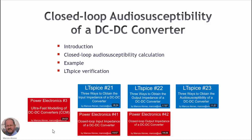This is another video in this series. Previously we have seen how to obtain the input impedance of a DC-DC converter in open loop and closed loop. Then we studied how to obtain the output impedance of a DC-DC converter also in open loop and closed loop. In the last video we saw how to obtain the audio susceptibility of a DC-DC converter operating in open loop. So today we are going to see how to calculate and verify the audio susceptibility of a DC-DC converter operating in closed loop.